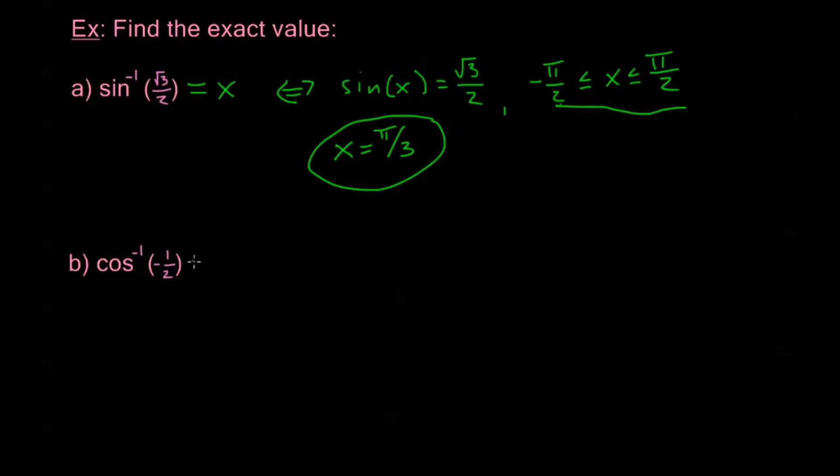Similarly with the second example. Cosine inverse of negative 1 half equals x. By definition what that means is that cosine of x equals negative 1 half. And x is between 0 and pi. So I need to find the value between 0 and pi where cosine of that value is negative 1 half.